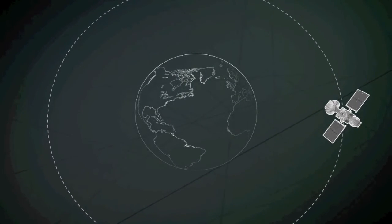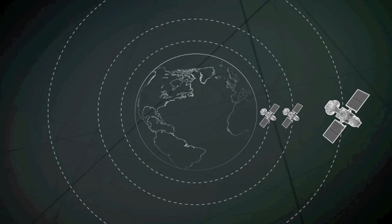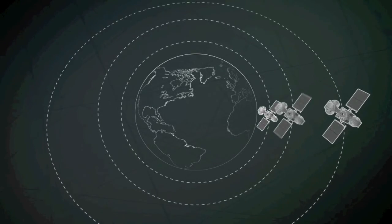Orbits that are not geostationary are also used for communications. They involve constellations of satellites circling closer to Earth. More satellites are needed, but each is less expensive and relays signals more quickly.